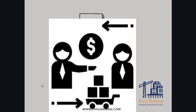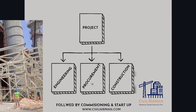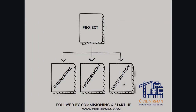Procurement purchases all the equipment and materials based on the list and specifications prepared by the engineer. Construction erects all equipment and materials purchased by procurement, as per the drawings and in accordance with the specifications produced by the engineering part.